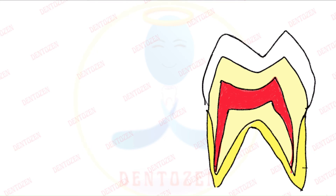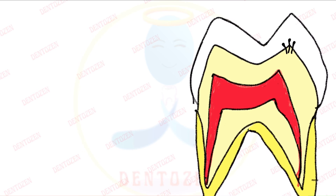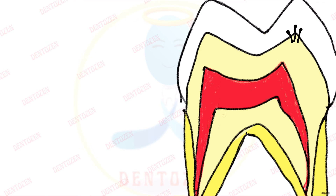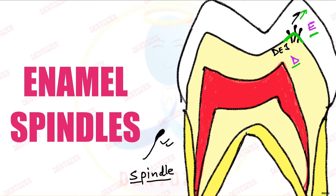The topic for today's video is an interesting structure present inside enamel. Enamel, which is the outermost layer of the tooth, is made up of enamel rods within which we have hydroxyapatite crystals. When we look at this enamel under the microscope we can see dark spindle-shaped structures crossing the dentino-enamel junction and going into enamel. These are known as enamel spindles.